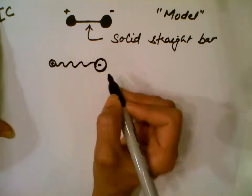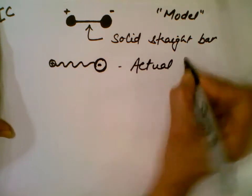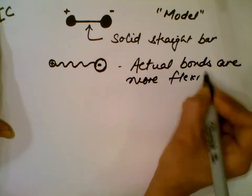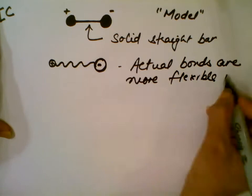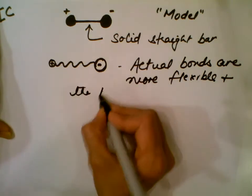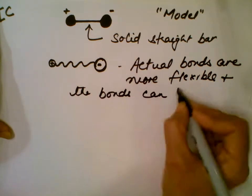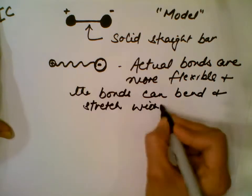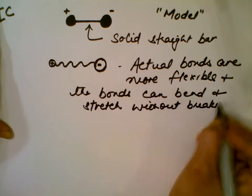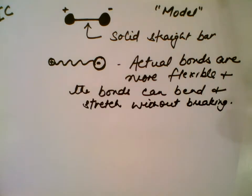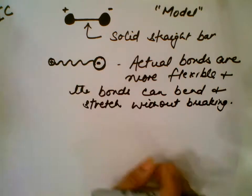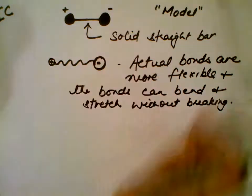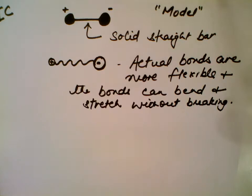In reality, the actual bonds are more flexible. These bonds can bend and stretch without breaking. Models are for quick and easy representation, but they have their limitations. The solid bar model is easier and quicker to draw and represents an easy representation.